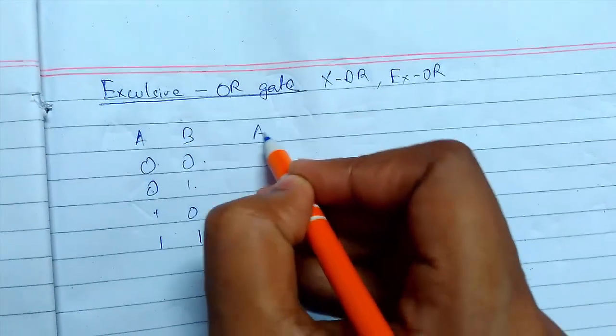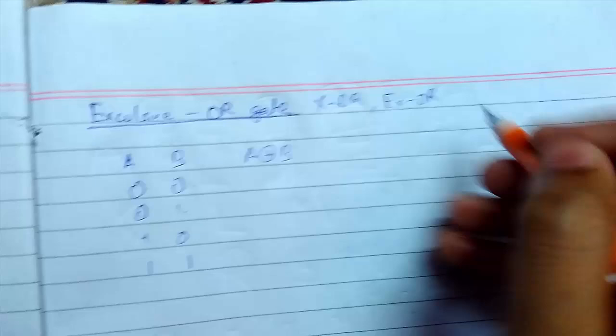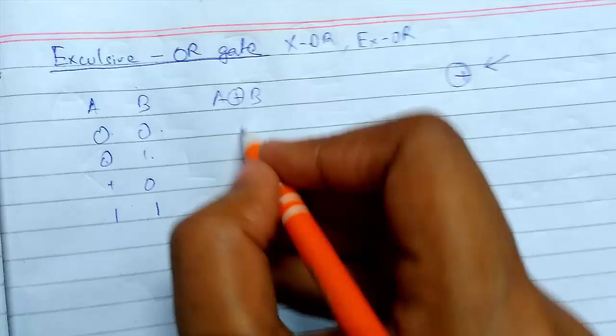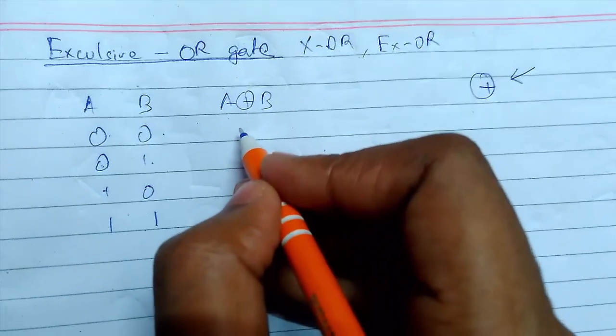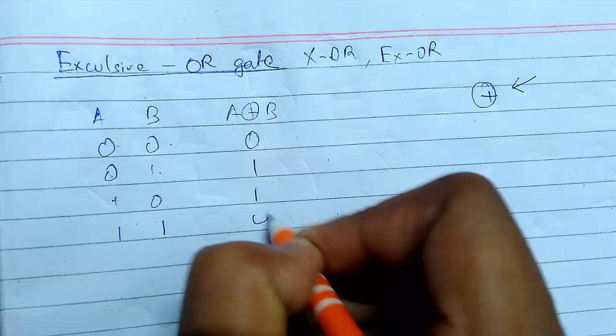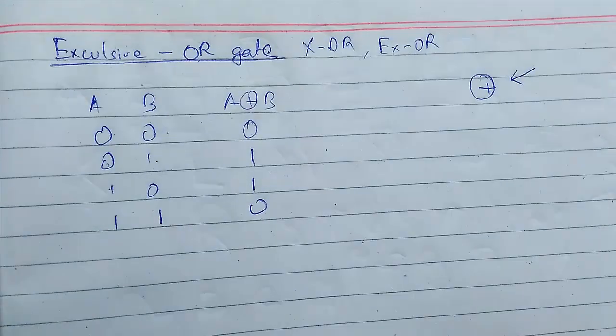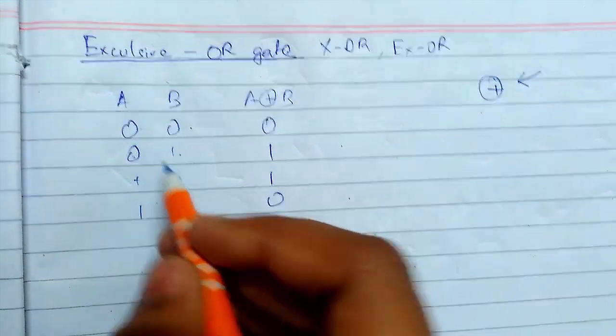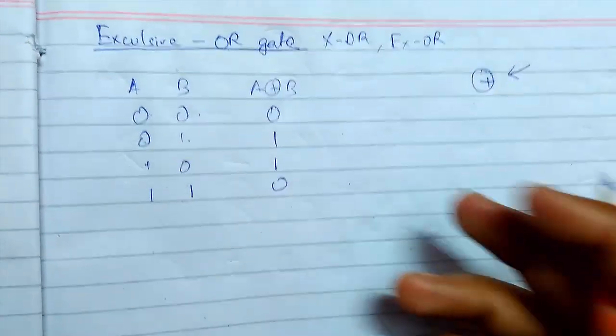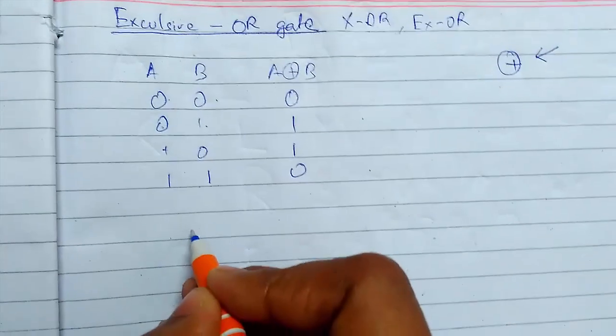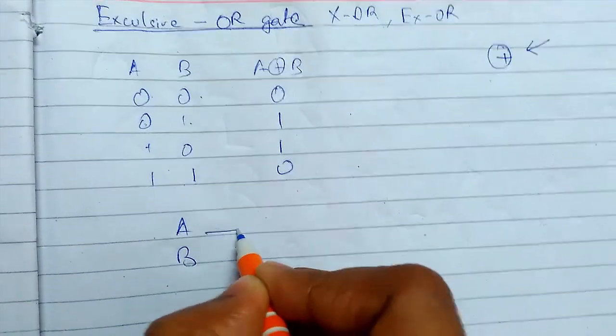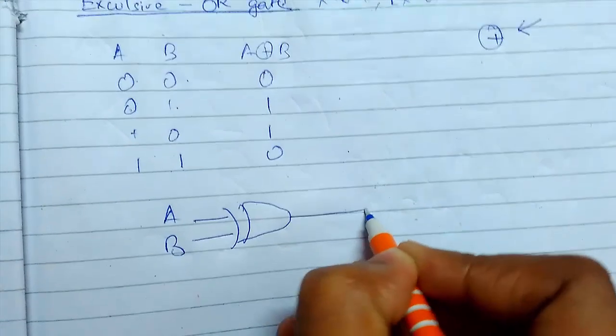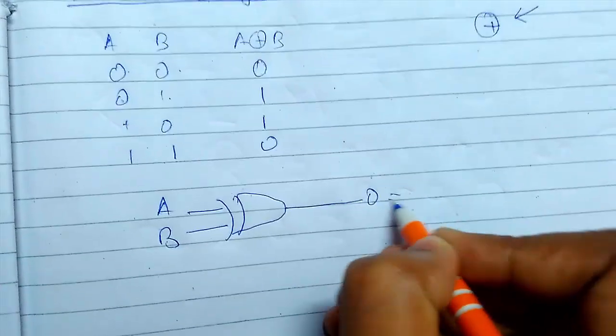The output - this is the symbol for XOR operation - will be 0, 1, 1, 0. You can also say that when there are an odd number of 1's, then the output is 1. The symbol of XOR gate is like this - suppose you have two inputs, this is the symbol of XOR gate.